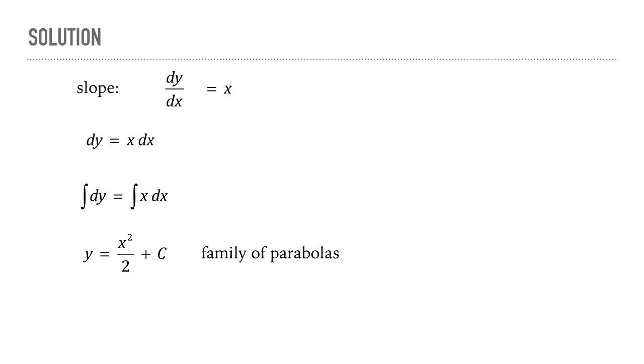For example, if c = 0 we get this curve. If c = 2 we get this member of the family, and if c = 4 we get this member.